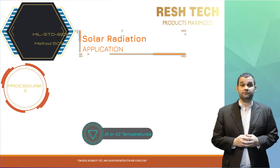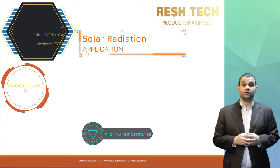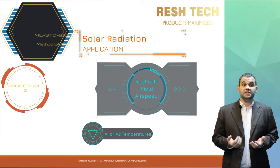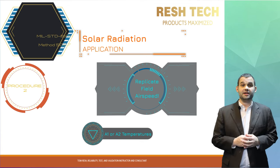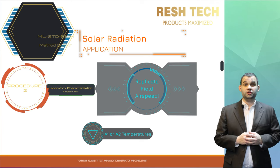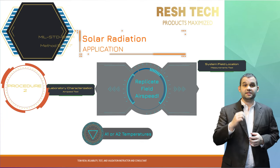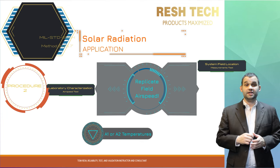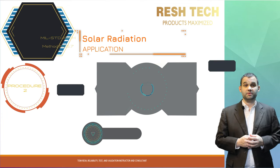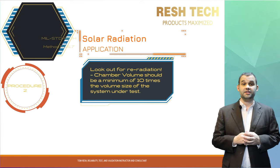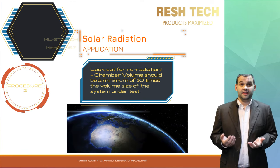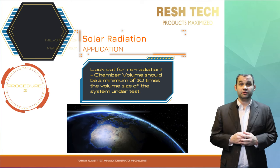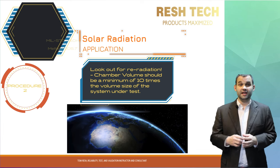The temperatures suggested for Procedure 2 are again derived from either A1 or A2 categories. The suggested airspeed for Procedure 2 needs to be adjusted to maintain the realistic thermal response of the system under test. You can find this by running a characterization test using Procedure 1, or better yet, collect temperature data from your system at the actual operating location or the worst-case site you are able to travel to. To prevent unrealistic heat generation — what MIL-STD-810H calls re-radiation — it is recommended that the chamber volume be a minimum of 10 times the volume of the system being tested.